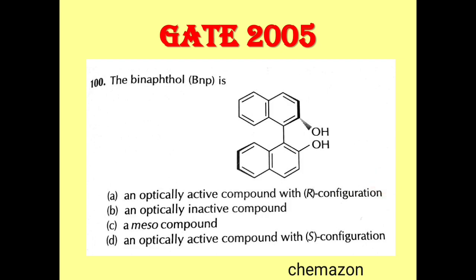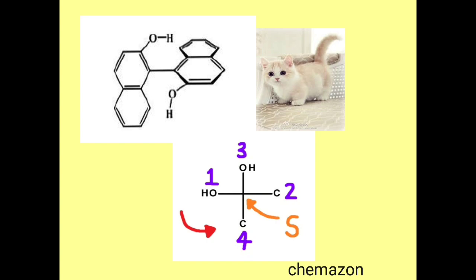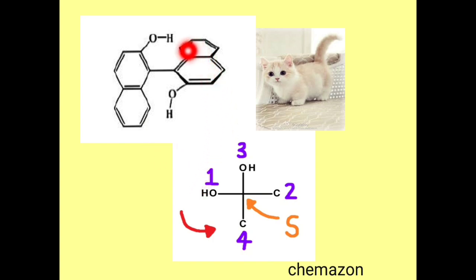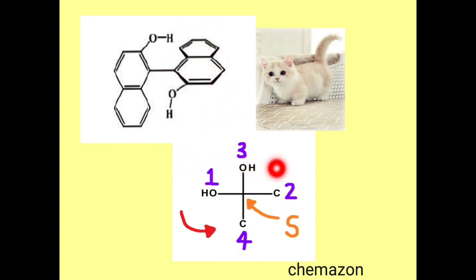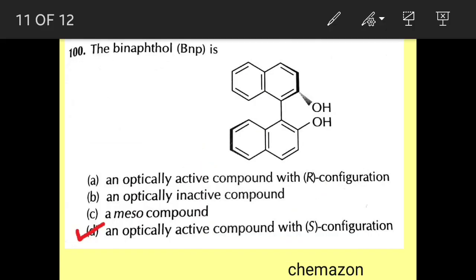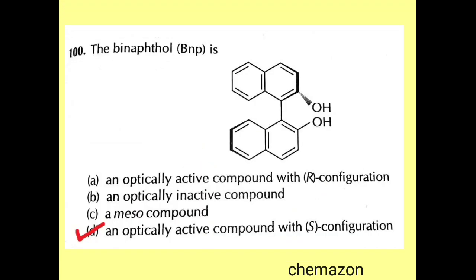Viewing the molecule from the observer's perspective: OH is on the left, the ring carbon on the right, one OH straight in front (up), and the other carbon at the bottom. The groups OH and carbon of this ring, being close to the observer, get the first and second priority. From 1 to 2 to 3 the direction is anticlockwise, so the absolute configuration is S. The correct answer is: an optically active compound with S configuration.